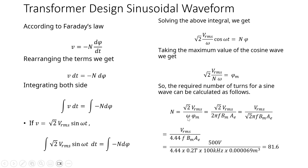If we have a sinusoidal waveform with an RMS voltage of 500 volts, a switching frequency of 100 kHz, and a maximum flux density of 0.2 tesla, we can calculate the number of turns. We also require the cross-section area of the core. With these values we get the number of primary turns, and similarly we can get the secondary turns — for example, for 250 volts we get approximately 40 turns.